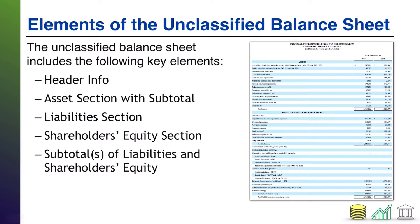So what are the elements of this unclassified balance sheet? First up, you're going to have a header. That header, similar to other financial statements, will have the company name and the financial statement name. And whereas other financial statements would have the period of time covered, because this is the balance sheet, it is going to have the point in time at which these balances are measured. Balances don't occur over time — balances are taken at a snapshot, a point in time. So the balance sheet is going to have a single date, a point in time.